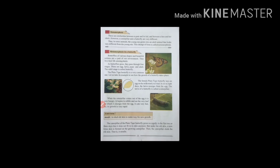The adult stage is called butterfly. The plain tiger butterfly is a very common one. Let us take its example to see how growth of butterflies takes place. The female plain tiger butterfly lays an egg on a milkweed leaf.